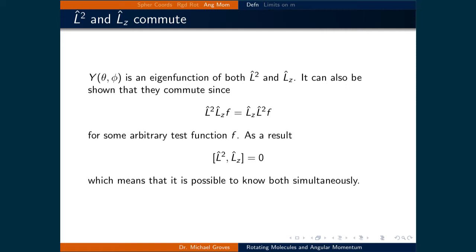This means we can straightforwardly determine the value of these classical observables. We can also show that these two operators commute by testing if the order of application matters. This means that it is possible to know both values simultaneously.